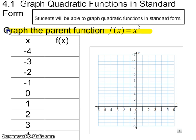So this f of x equals x squared is the parent graph or the parent equation of a quadratic function. What that means is that it's the simplest quadratic function we can have.